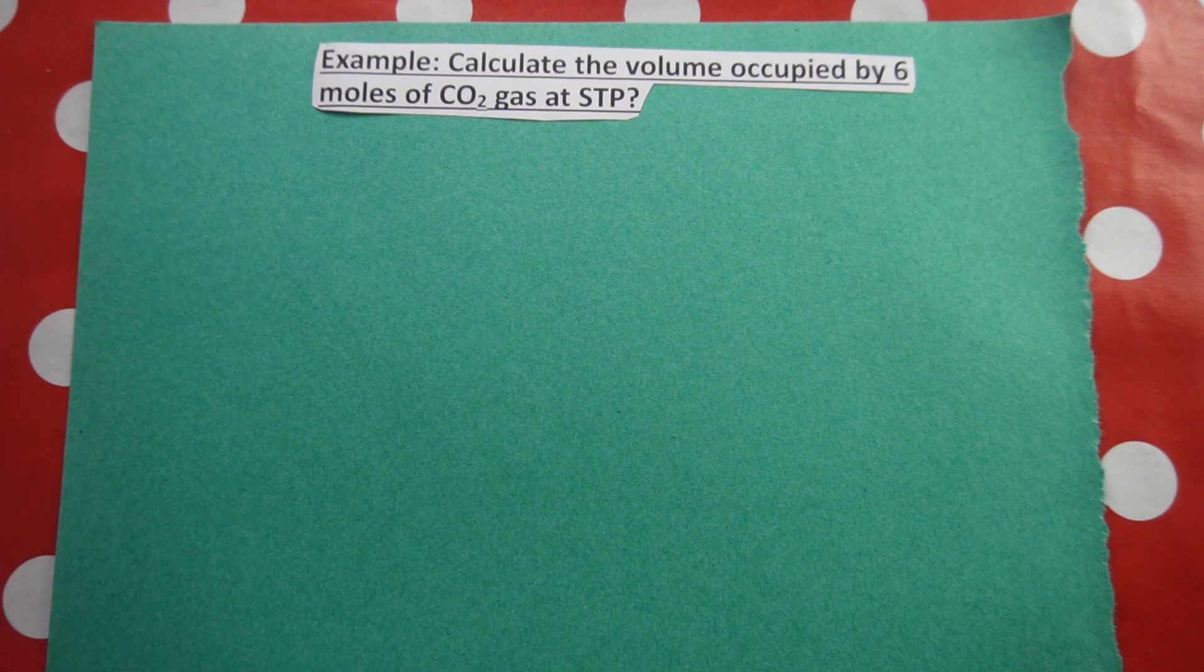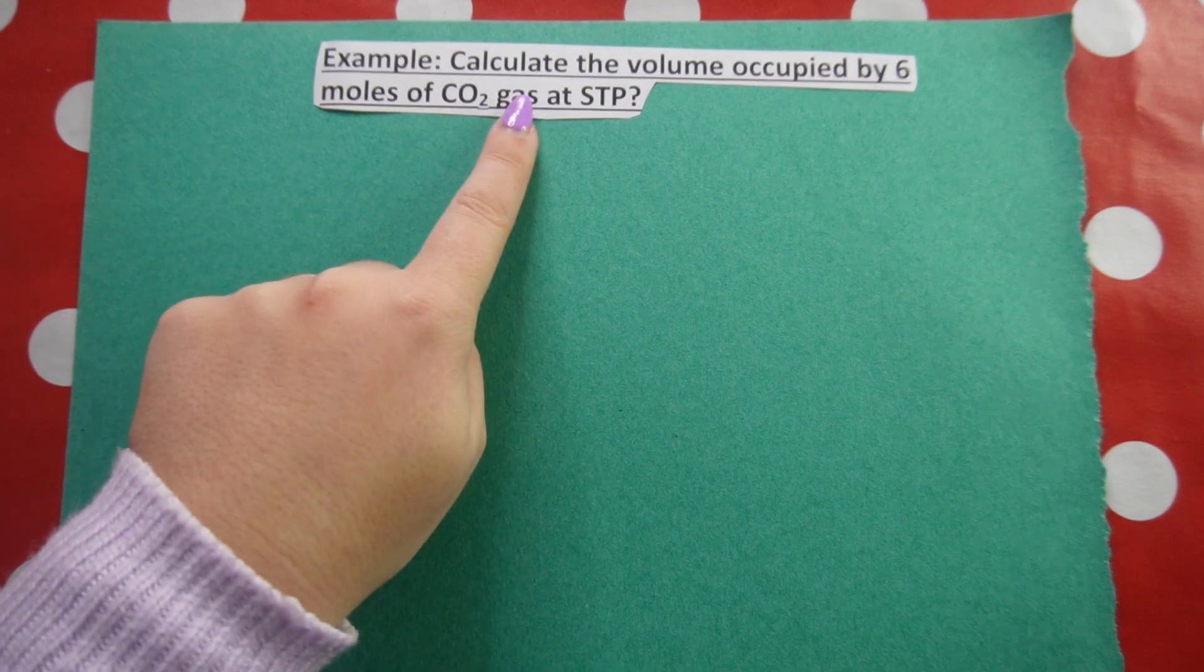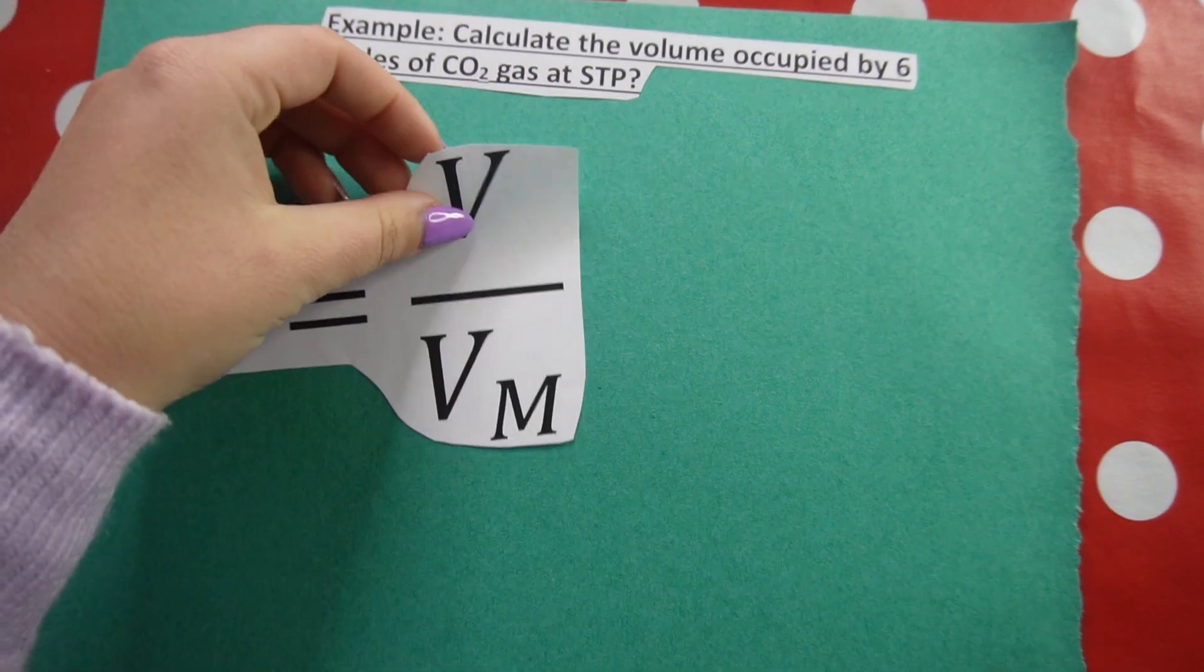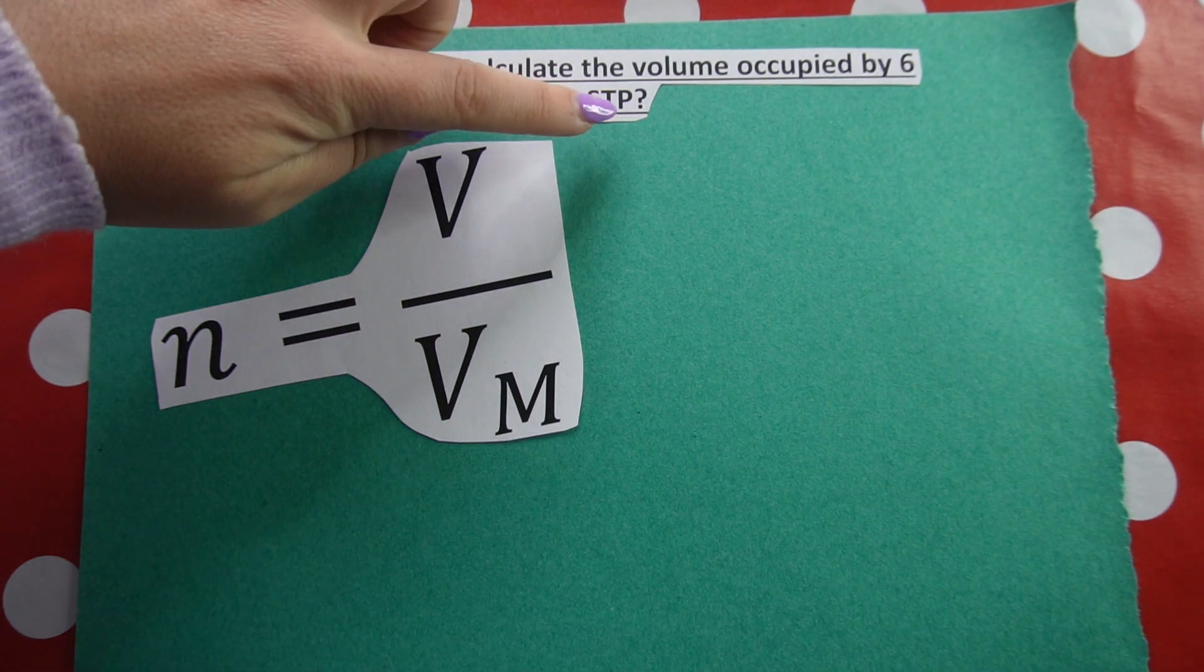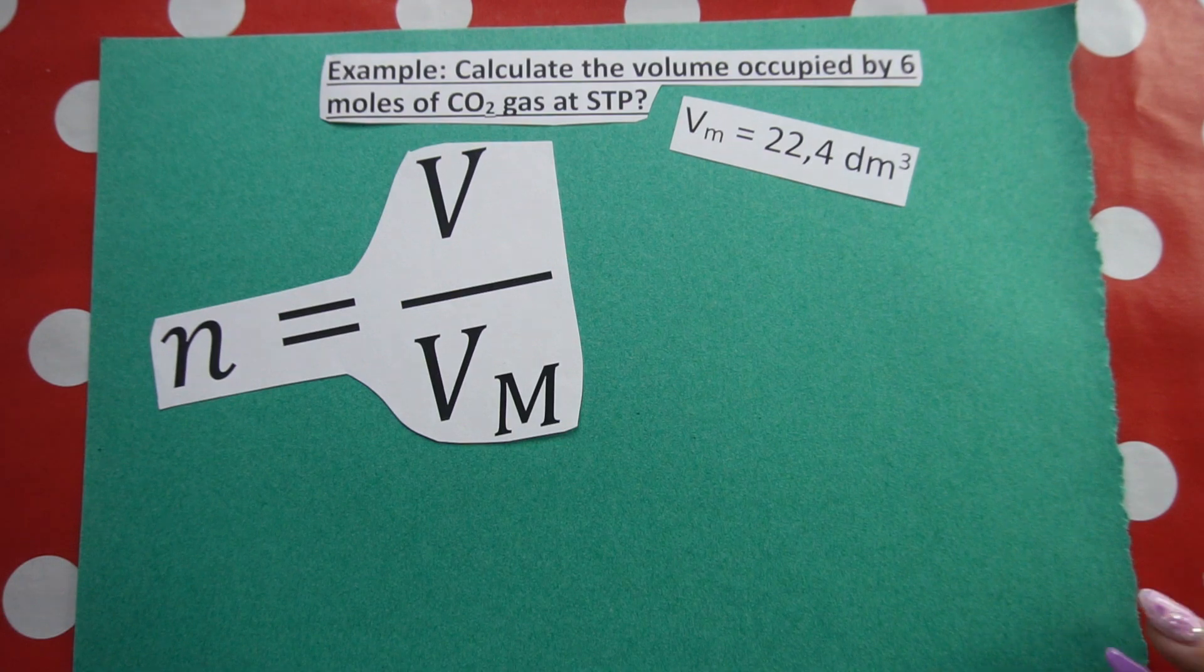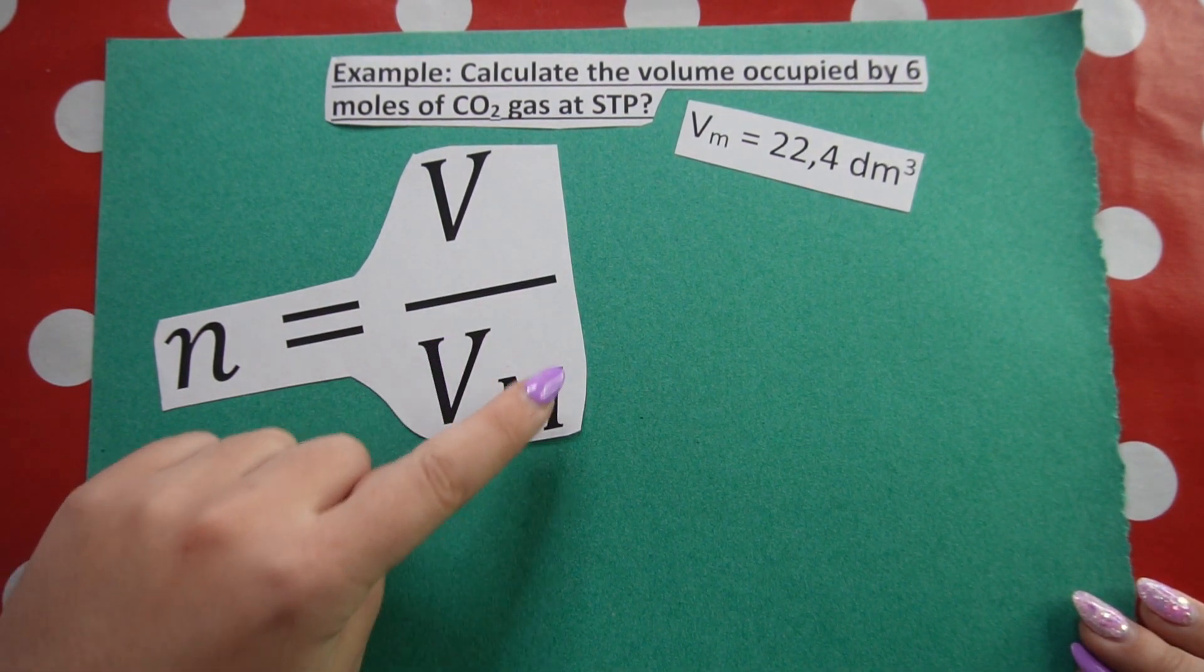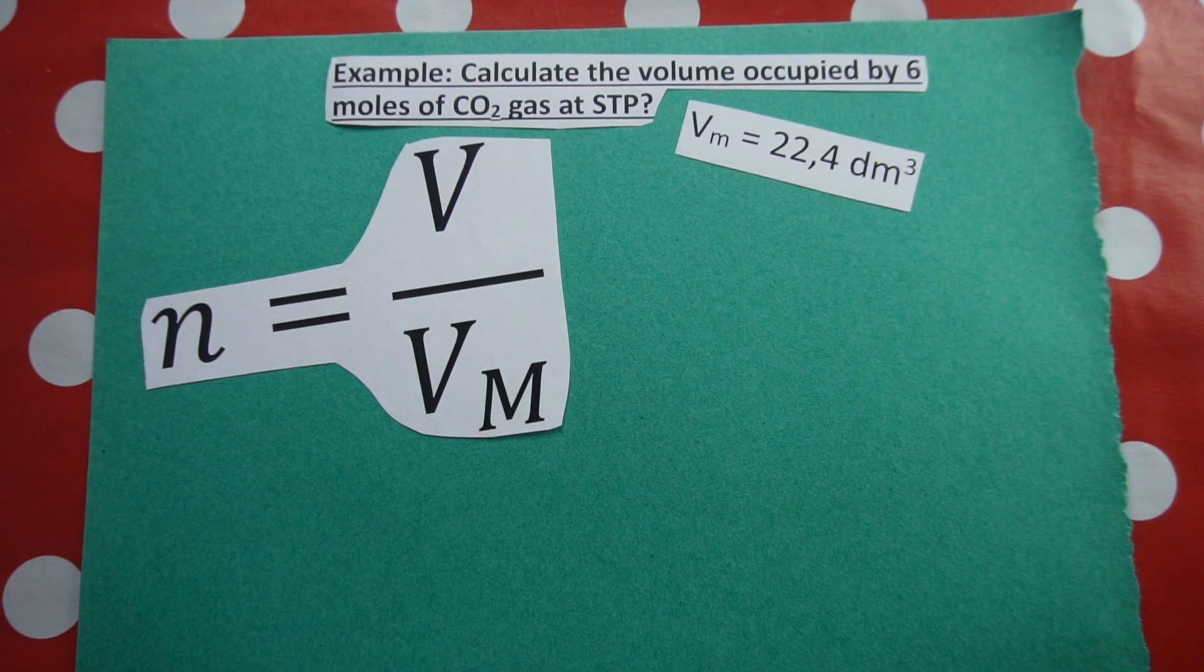Calculate the volume occupied by six moles of CO2 gas at STP. As soon as you see gas, we know we are going to be using this formula: N is equal to V over Vm. And as soon as you see STP, we know that our molar volume is 22.4 cubic decimeters.